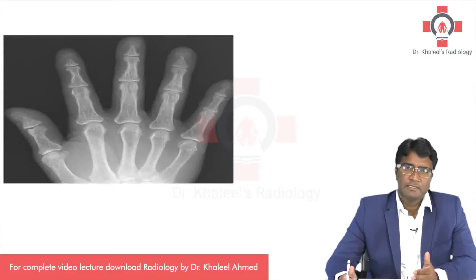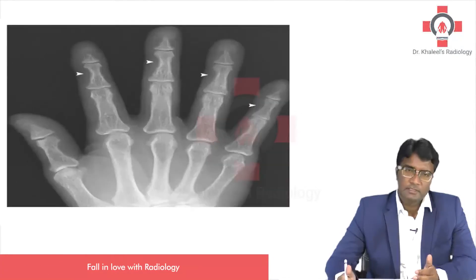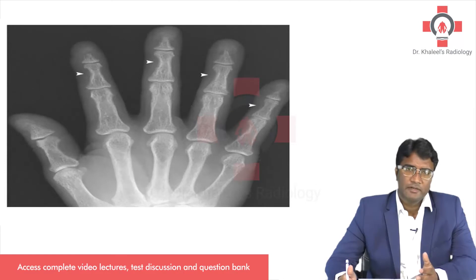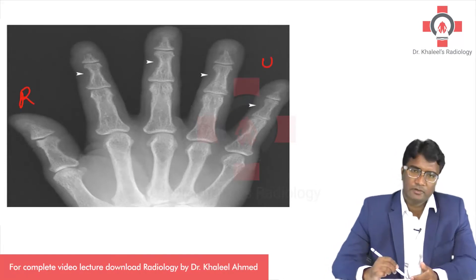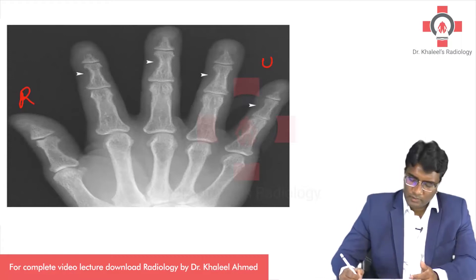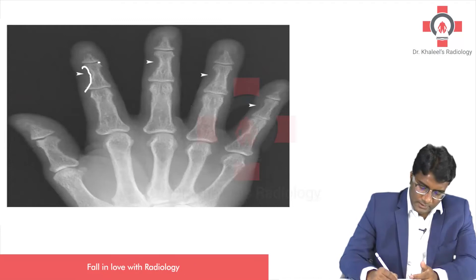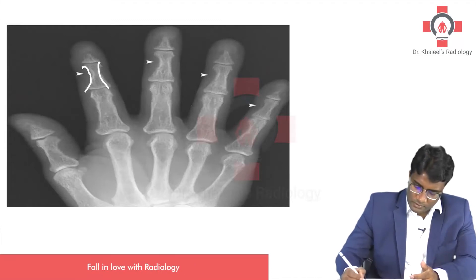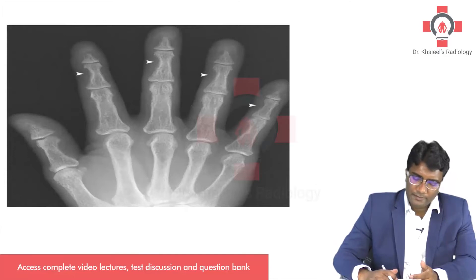In this hand radiograph, we see that there is erosion classically involving the radial end of the middle phalanx. If you can see this image, this is the thumb, this is the radius and this is the ulnar aspect of the digits. You can see those erosions classically involving the radial end of the middle phalanx — this is the radial end, this is the ulnar end.